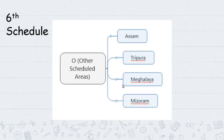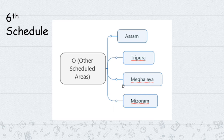The Sixth Schedule covers tribal areas in Assam, Tripura, Meghalaya, and Mizoram. Tribal representatives and civil society organizations demanded separate administration. These areas have Autonomous District Councils (ADCs) as the governing body for tribal administration.